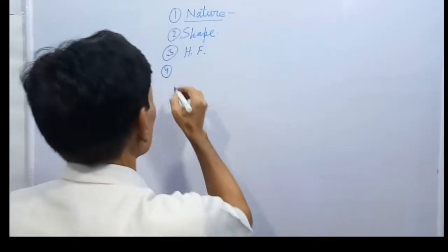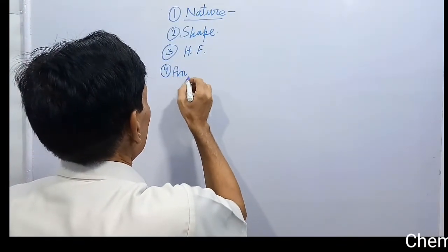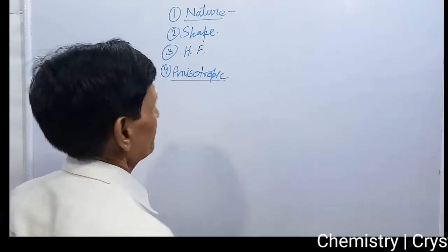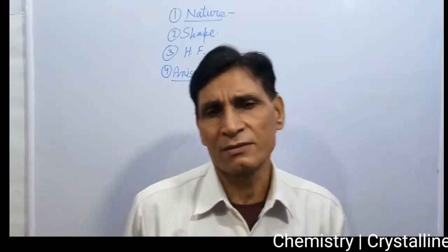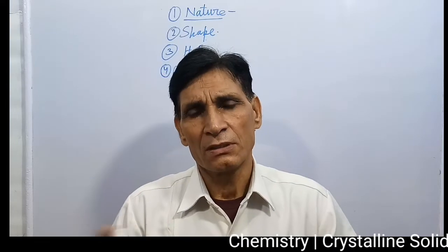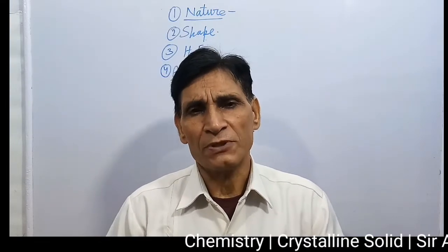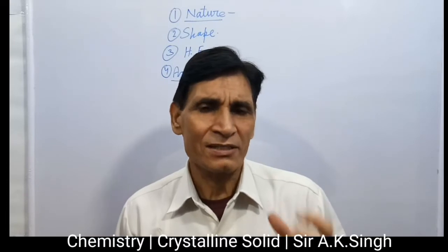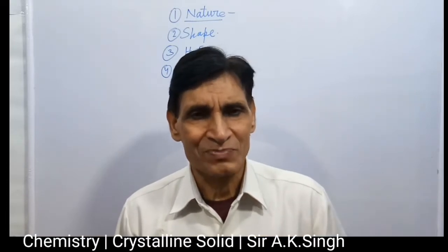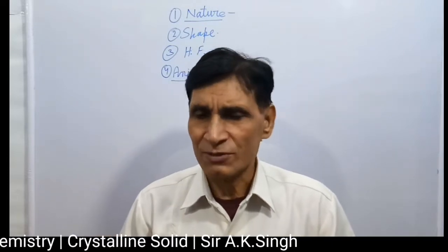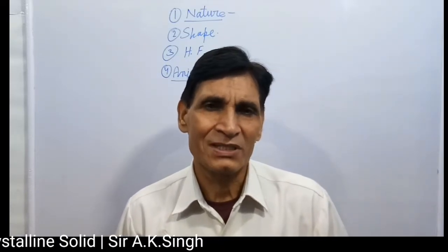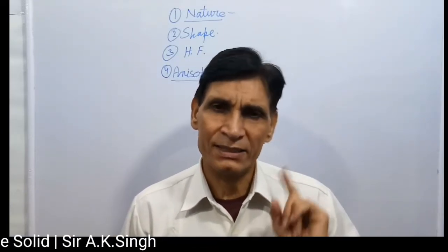Number four: crystalline solids are anisotropic. Anisotropic means some of their physical properties — like electrical resistance, conductivity, refractive index, etc. — have different values when measured along different directions in the same crystal. This is the anisotropic property of crystalline solids.